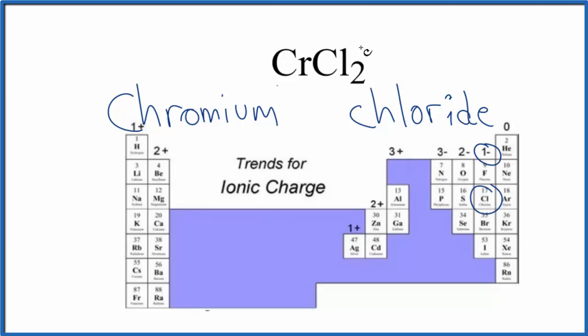So each chlorine atom is going to have an ionic charge of 1-. Since we have two of them, this is 2-. The chromium has to be 2+.